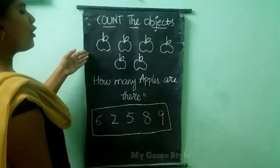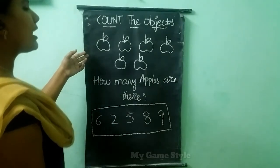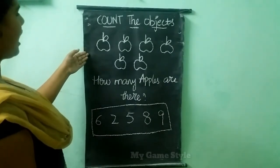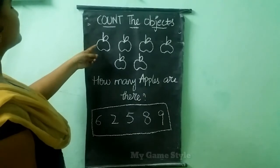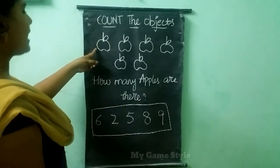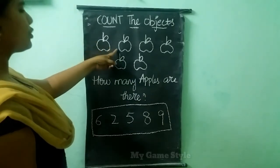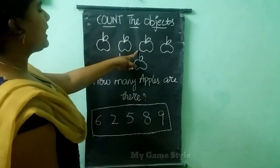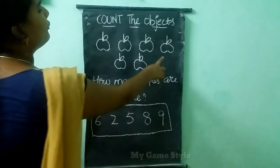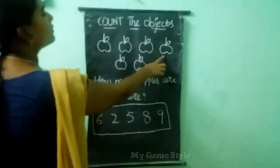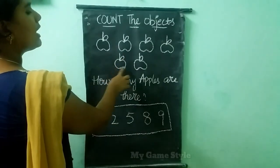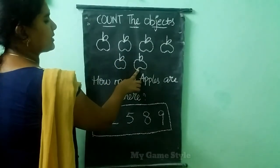Here how many apples are there, children? Let's count them. 1, 2, 3, 4, 5, and 6.